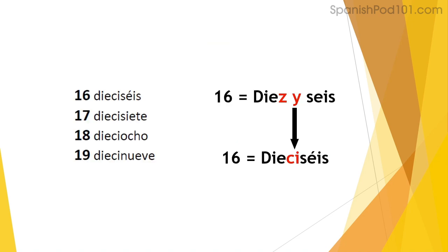From 16 to 19, in Spanish we are basically saying '10 and the number afterwards.' For example, 16 is '10 and 6.' The three words are fused into one and said quickly, and Z becomes C while Y becomes I. Let's practice: dieciséis (16), diecisiete (17), dieciocho (18), diecinueve (19).